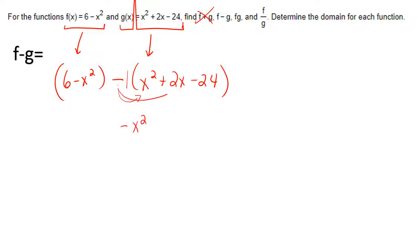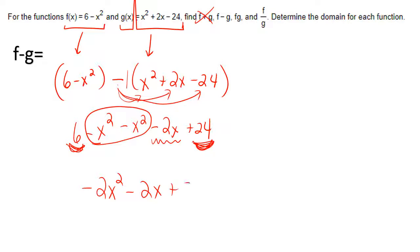So, that would be negative x squared, negative 2x, and positive 24. It will change the signs of the terms in the second function. However, the first function remains unchanged. Now, let's combine like terms. Negative x squared plus negative x squared is negative 2x squared. Then I have this negative 2x term. Then I have the 6 and a positive 24. Add those and you get 30. This would be my final answer.